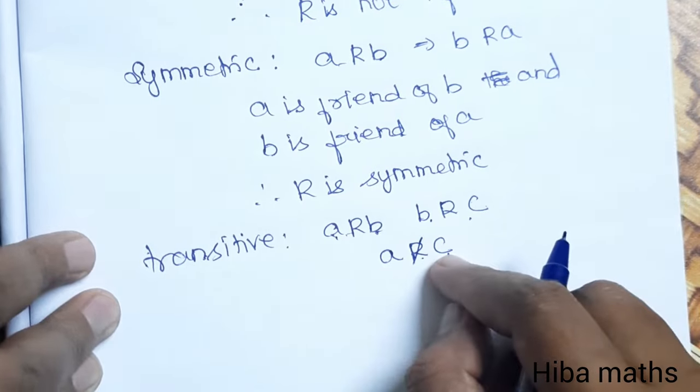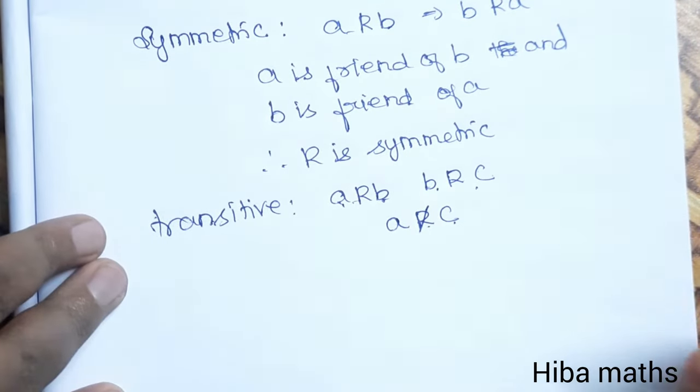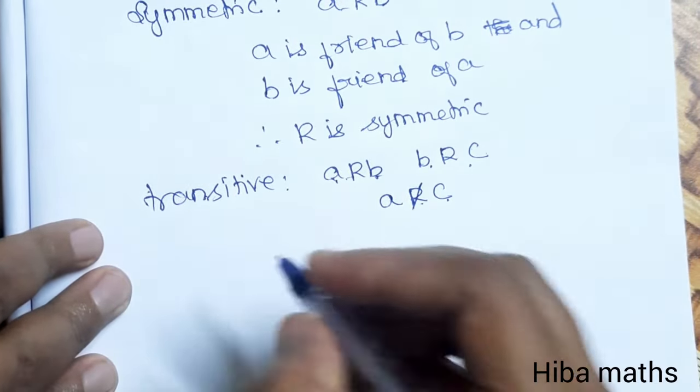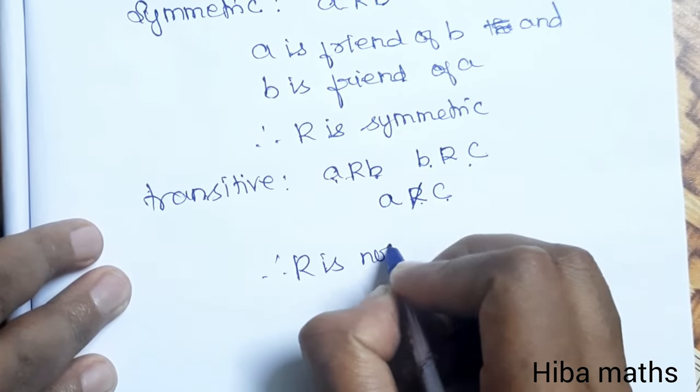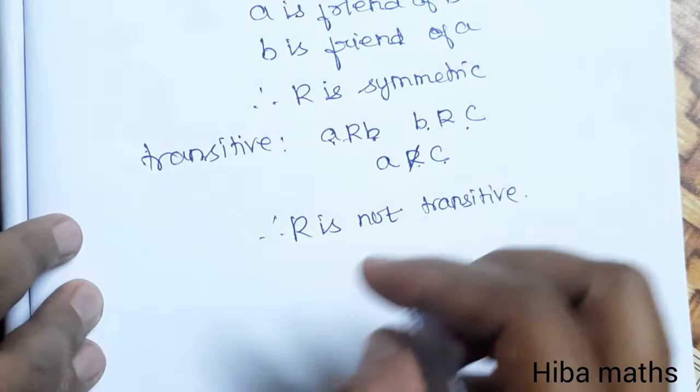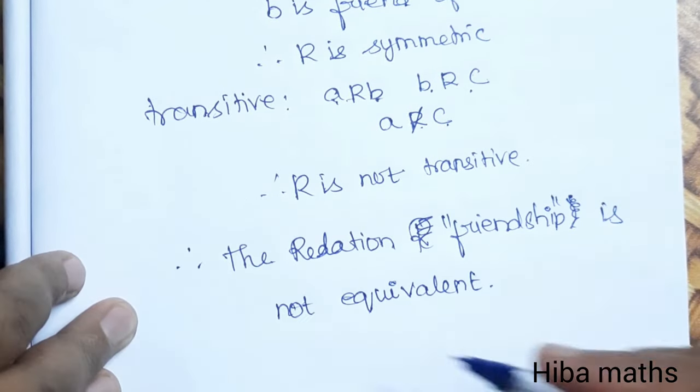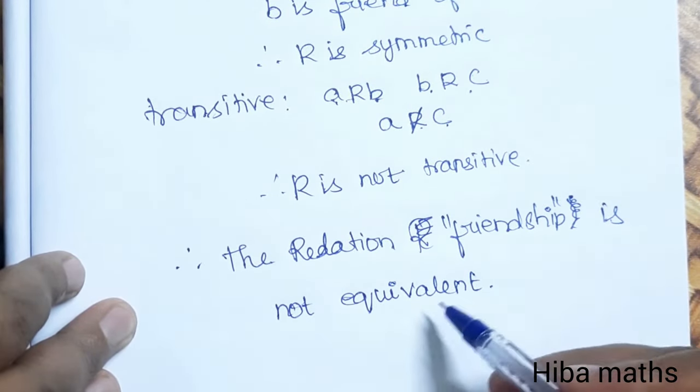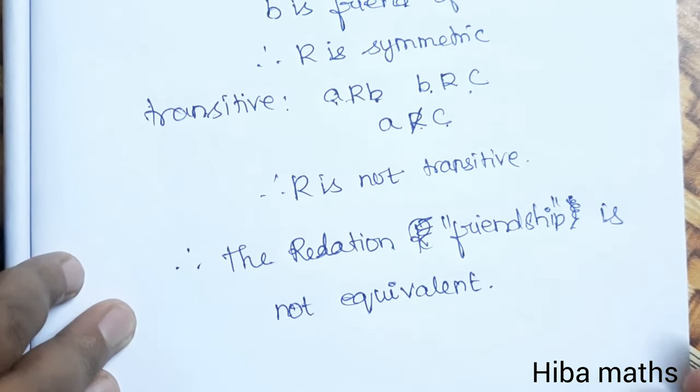So it is not transitive. Therefore, R is not transitive. So it is not transitive. Therefore, the relation friendship is not equivalent. If you understand, thank you so much for watching.